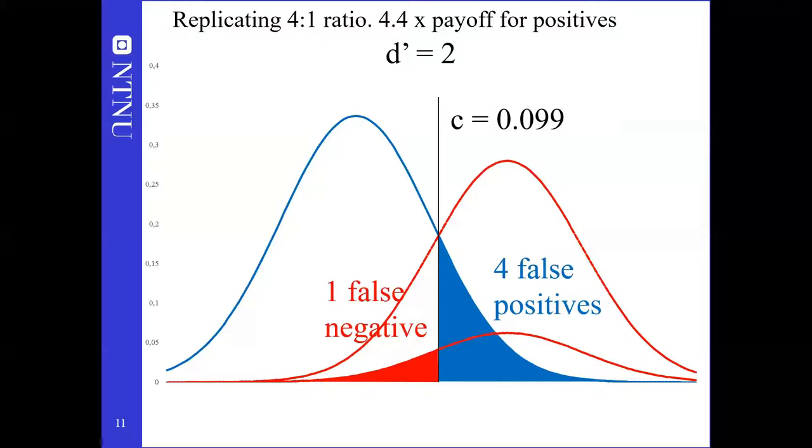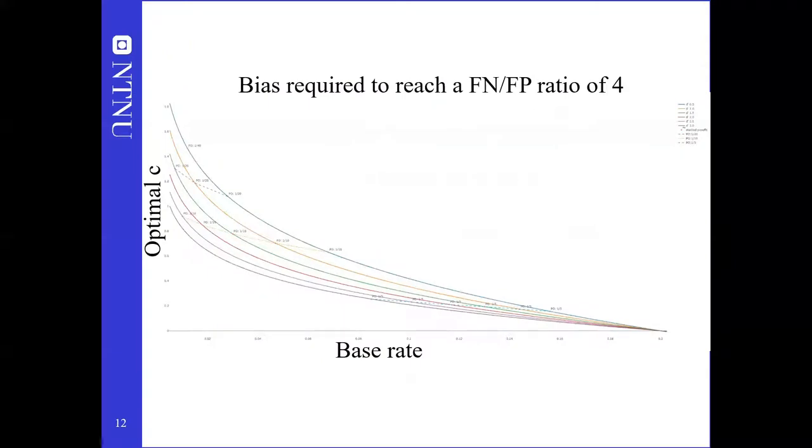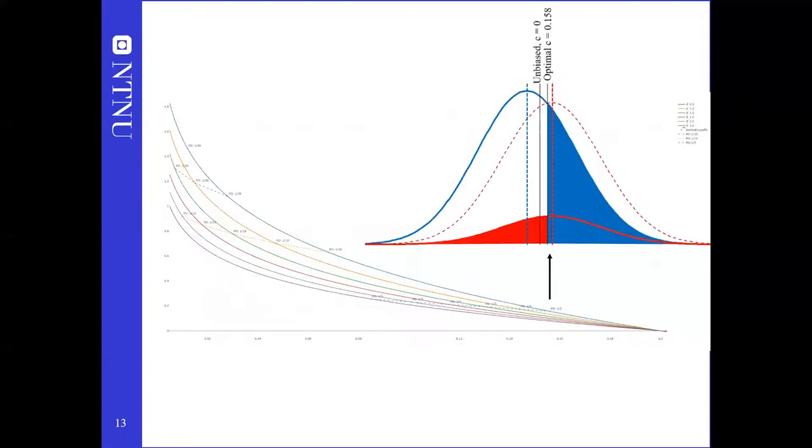If we keep repeating this procedure of picking a base rate and a d' and iteratively adjusting payoff asymmetry and calculating the new decision criterion until we have 4 times as many false positives as false negatives, the results look like this. Each line connects cases with the same d' ranging from 0.5 to 3. This point, for example, corresponds to a base rate of 16%, a d' of 0.5, and false positives being 5 times as important as false negatives.